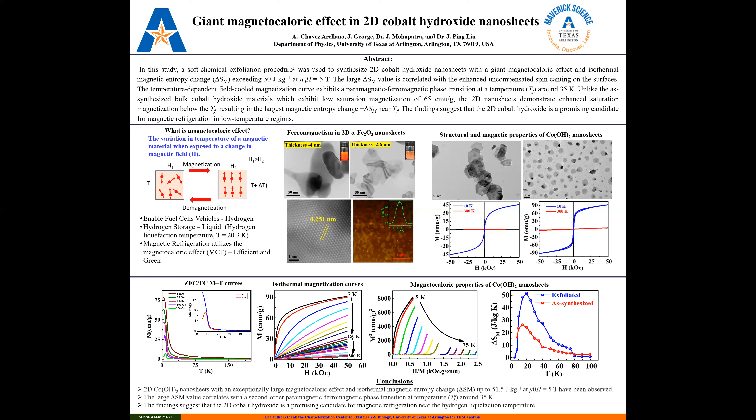Additionally, the graph shows the Arrott plots with a positive slope, and this demonstrates a second-order magnetic phase transition.